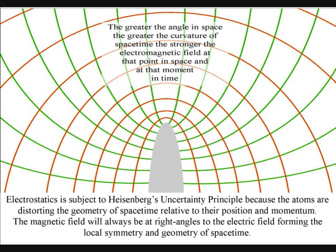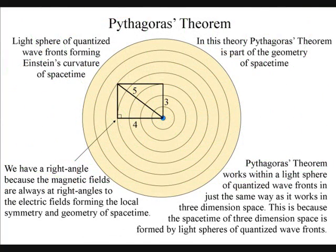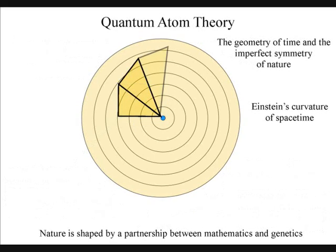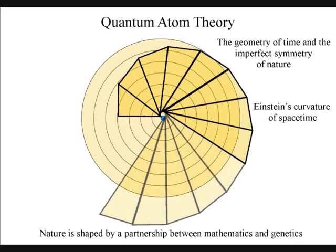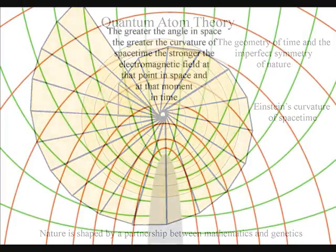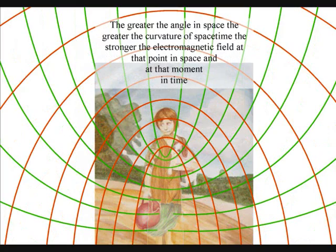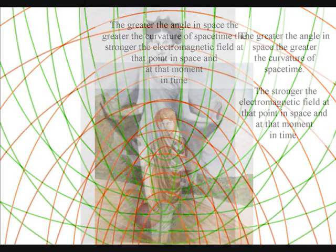The magnetic fields are always at right angles to the electric fields, forming the local space-time symmetry and geometry that will spiral out, creating the visual and mathematical patterns of our universe. The greater the angle in space, the greater the curvature of space-time, the stronger the electromagnetic field at that point in space and at that moment in time.